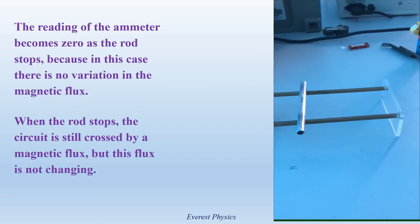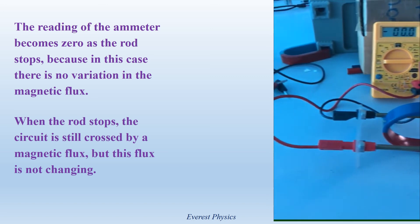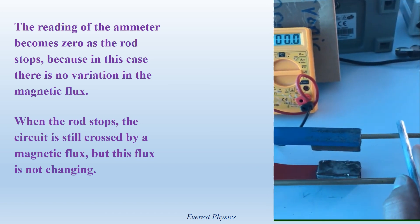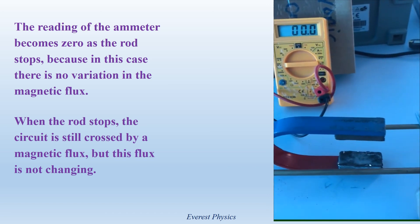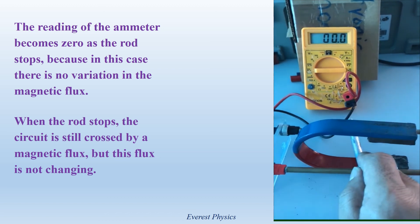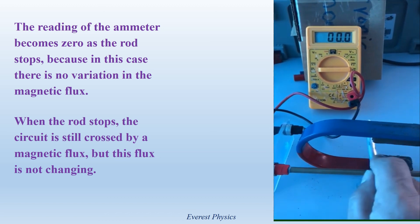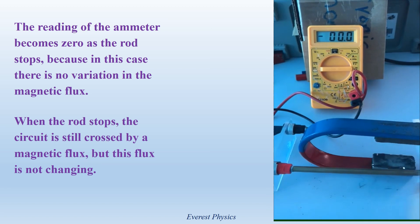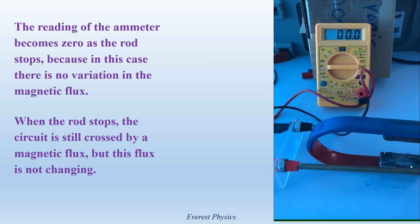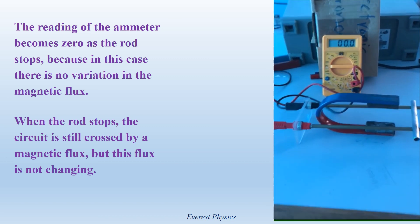These are the two parallel conducting rails, connected from the left side by a yellow multimeter adjusted to measure electric current. The reading is zero because the rod is at rest. During the motion of the rod, the ammeter shows a non-zero reading, which means that there is a variation in the magnetic flux. When the rod becomes at rest, the ammeter shows a zero reading because there is no variation in the magnetic flux. Take into account that when the rod stops, the circuit is still crossed by a magnetic flux, but this flux is not changing, so we have no induced current in the circuit.